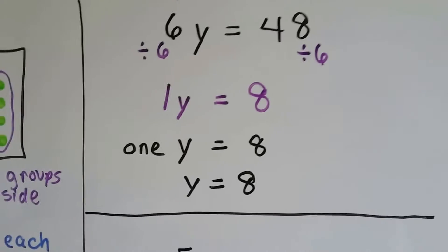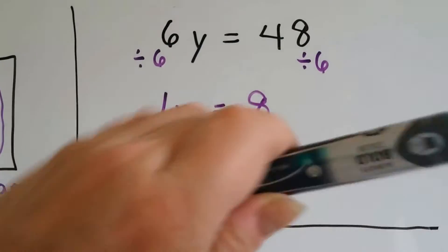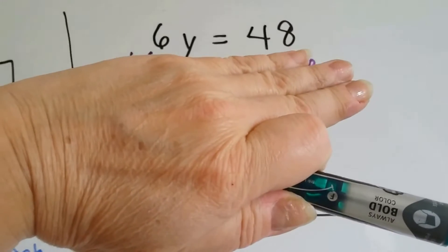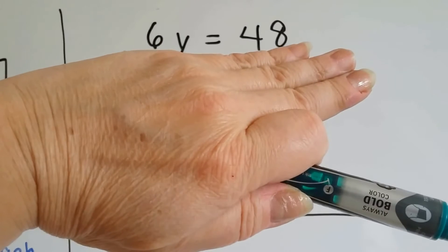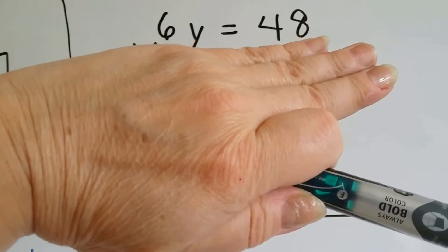We've got 6y equals 48. And if you remember, that means 6 times y equals 48. So to do the inverse operation of multiplication, because that's what it means when there's a variable next to a number, right? To multiply. So we're going to do division.